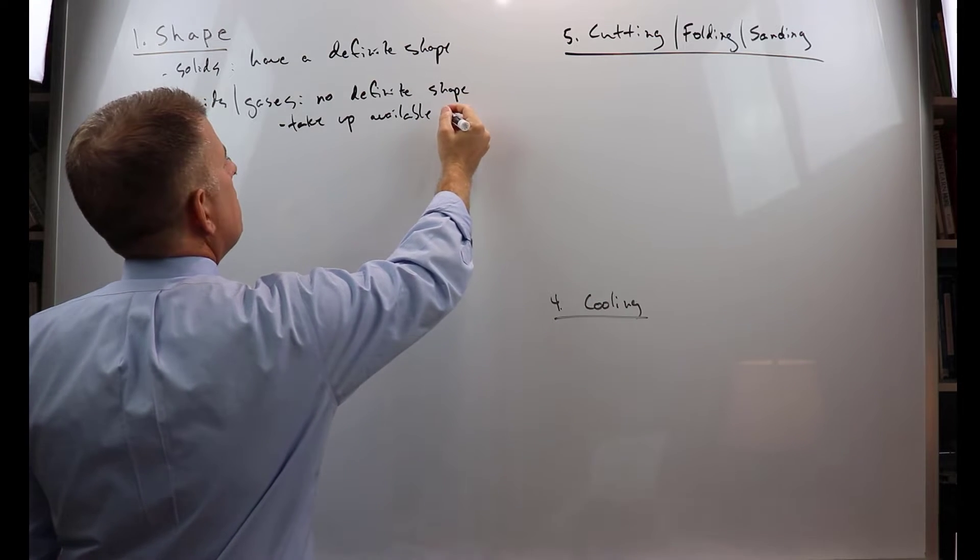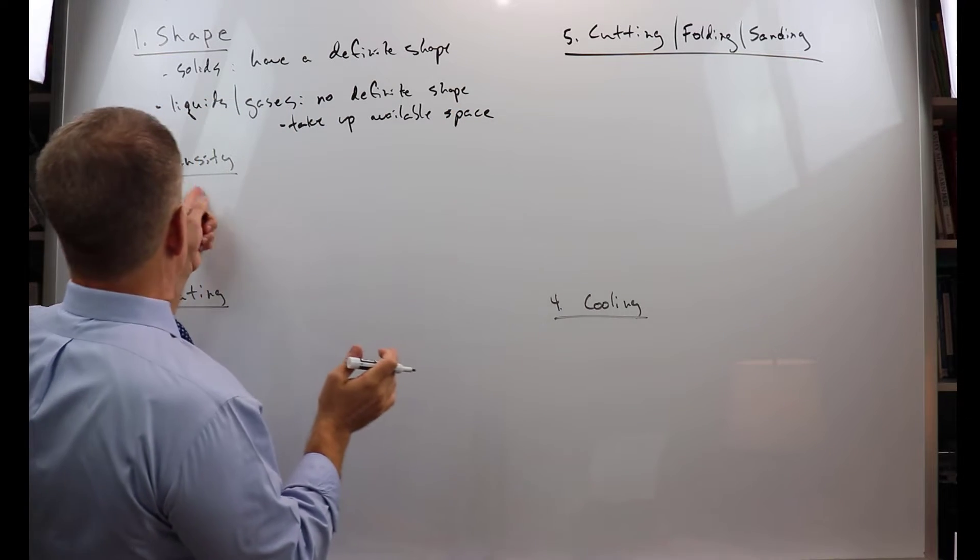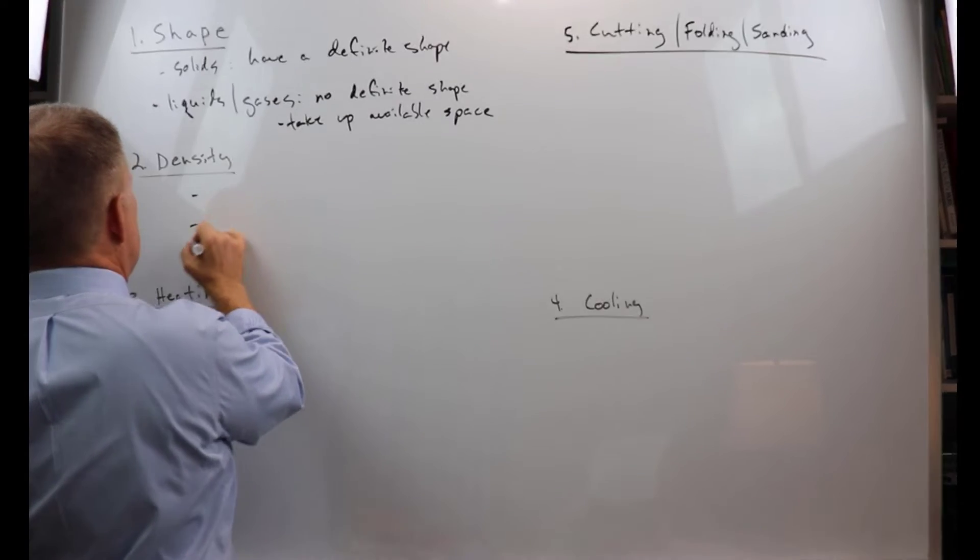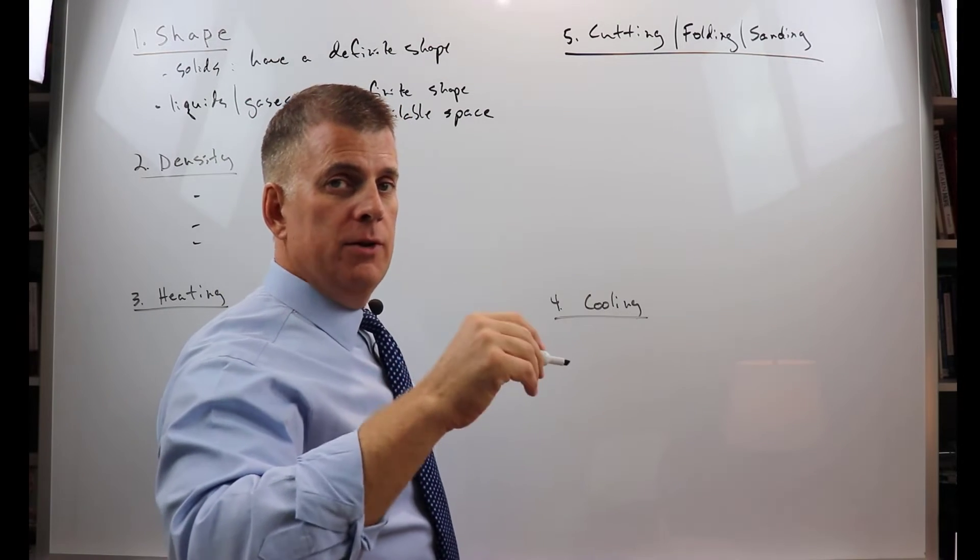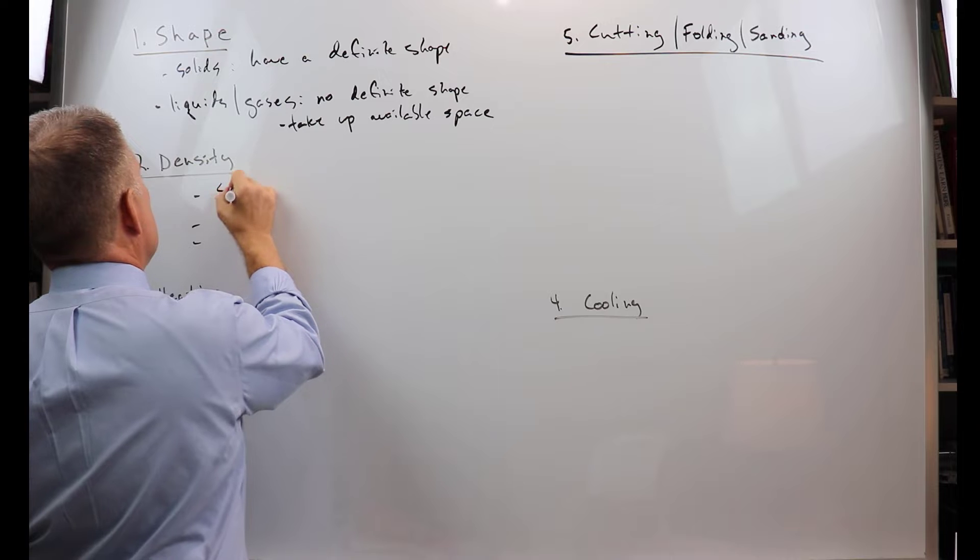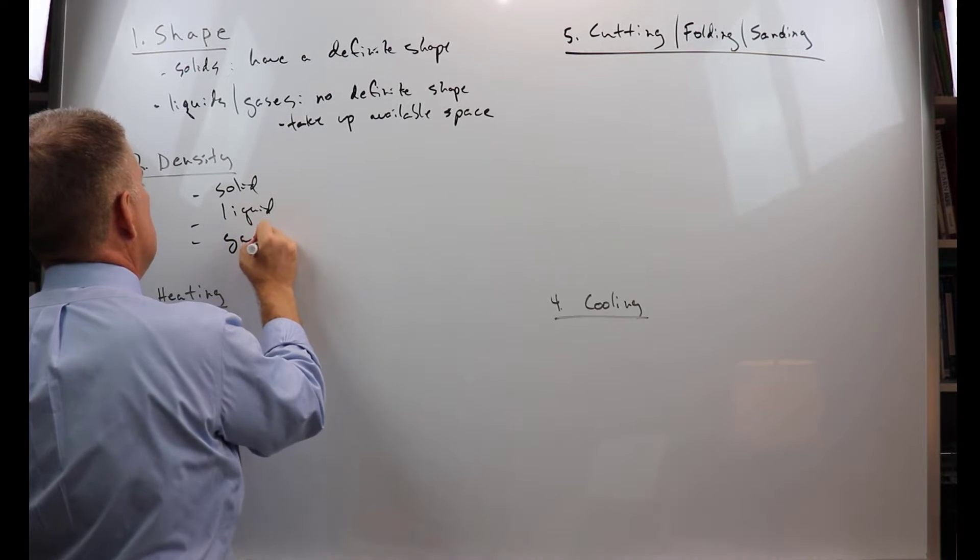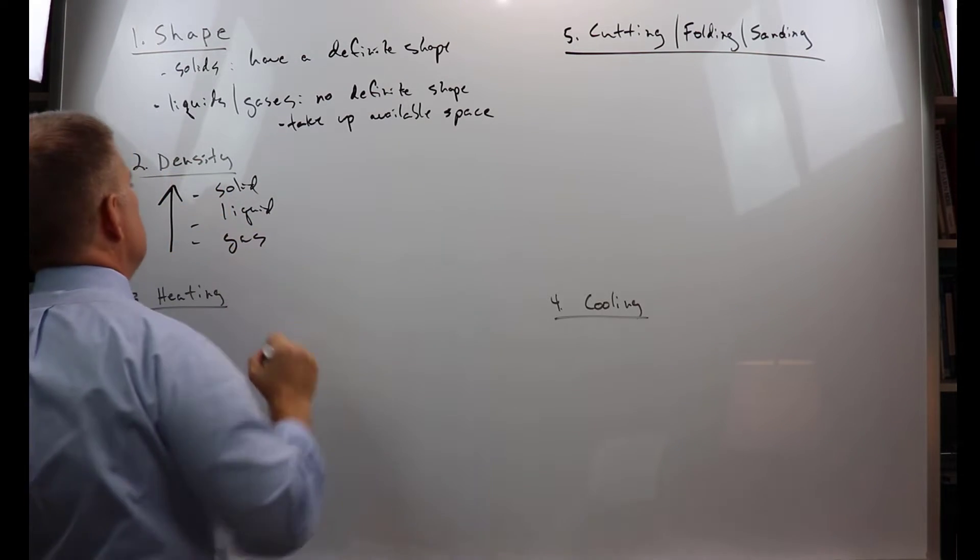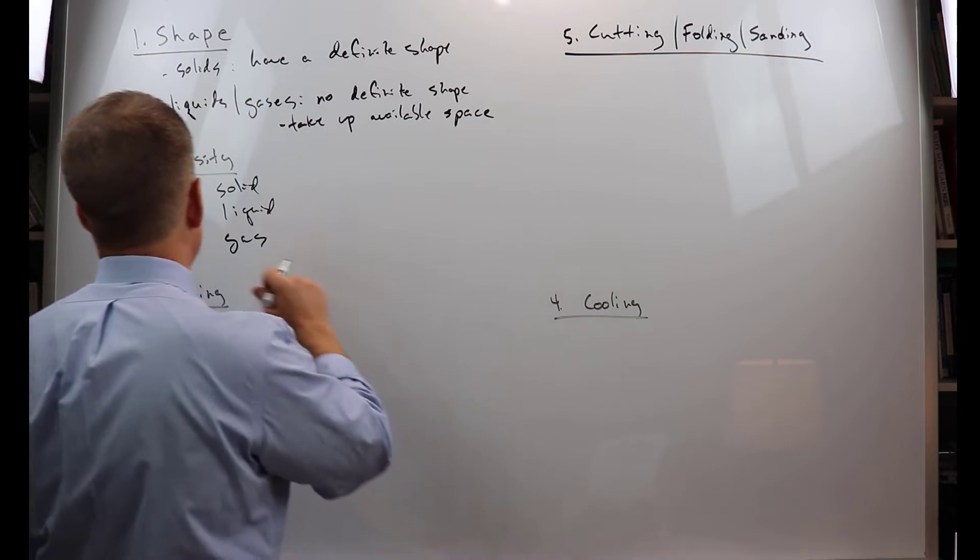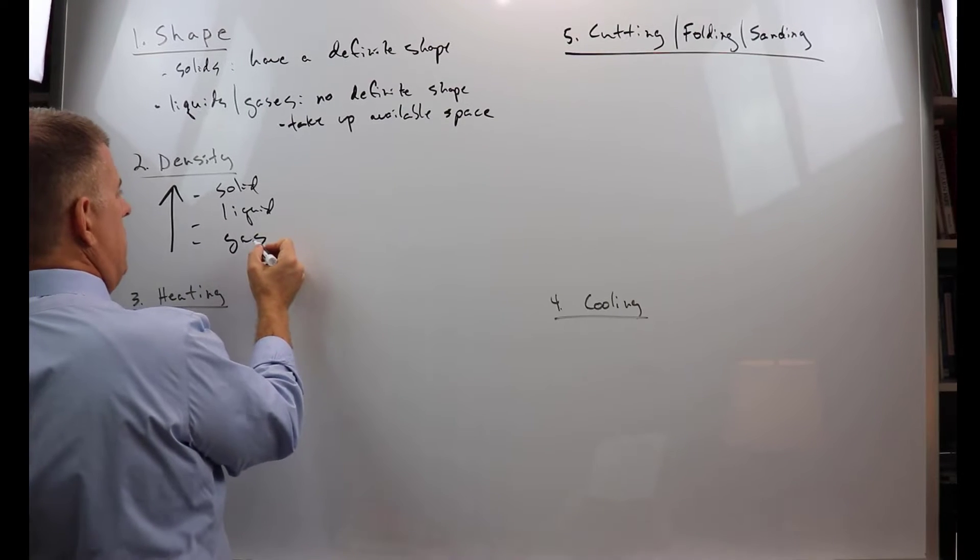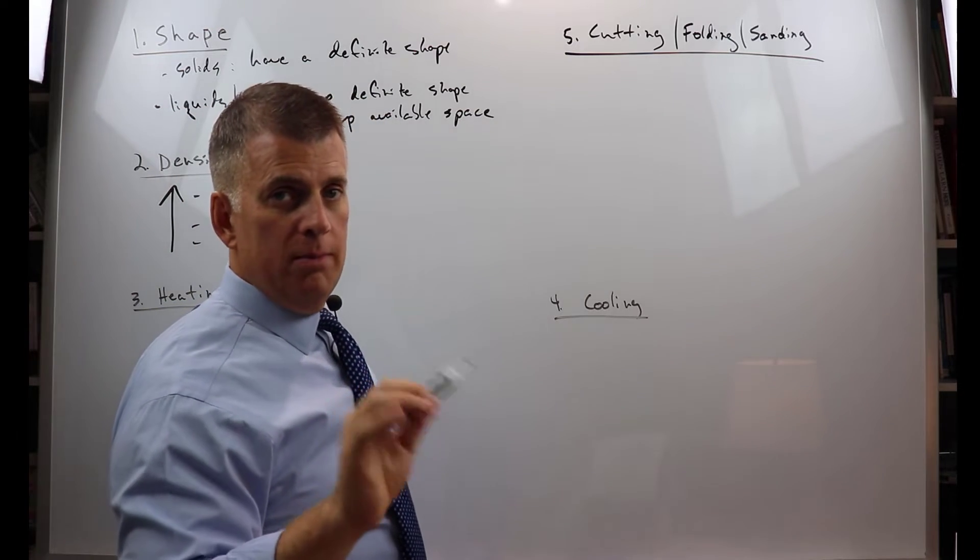The second change has to do with density, and what the TEKS are talking about is the move from a solid to liquid to a gas or gas to liquid to solid. So I'm going to put solid, liquid, gas. The density increases usually, and for most materials, the density increases as you go from a gas to liquid to solid. That's not always the case - there's one main exception to that.